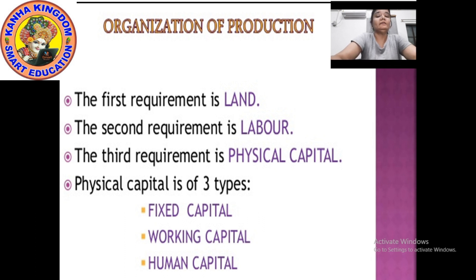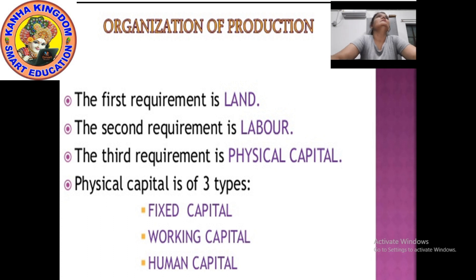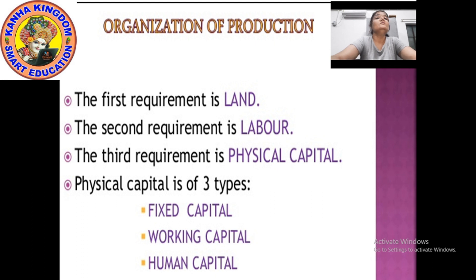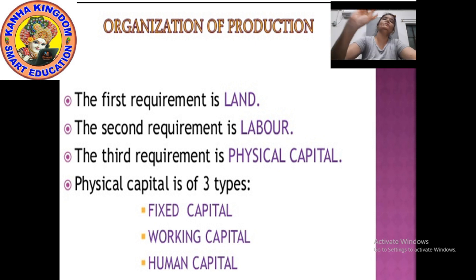Let's talk about the third requirement — physical capital. Physical capital is the variety of inputs required at every stage during production — raw materials, tools, sometimes hard cash in hand. Such kinds of things are called physical capital. Now we can divide physical capital into two types: fixed capital and working capital.